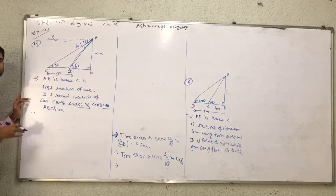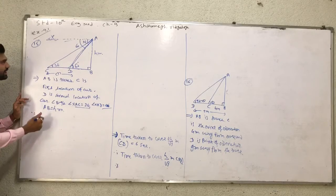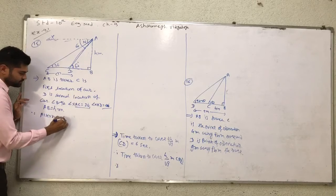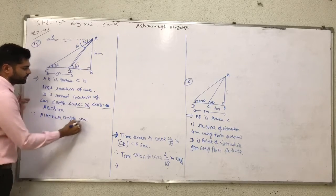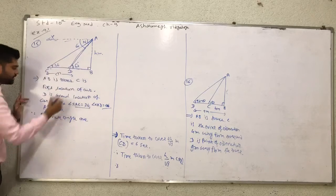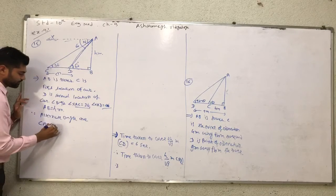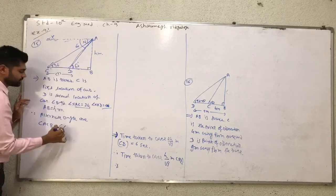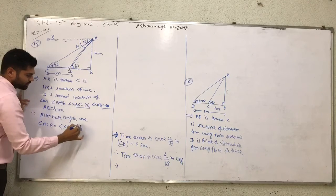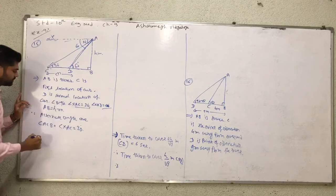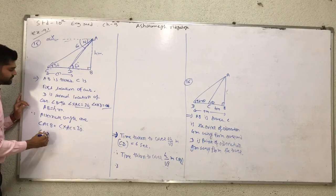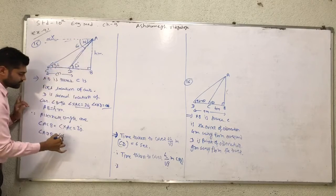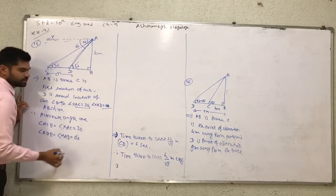So the first step is to convert the angle of depression to angle of elevation using alternate angles. First alternate angle pair: angle ACB is similar to angle XAC, equal to 30 degrees. Next, another alternate angle pair: angle XDB is equal to angle XAD, equal to 60 degrees.